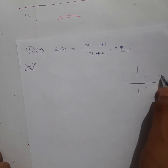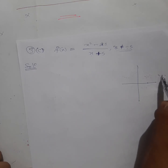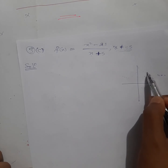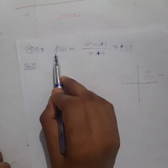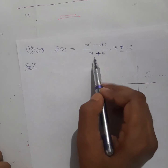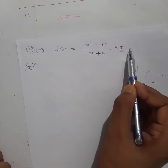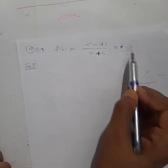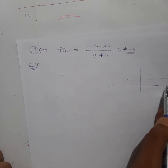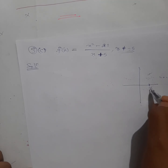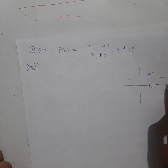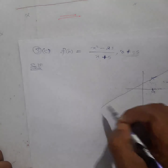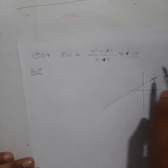The question is to check whether this function is continuous or not overall. Remember in the first question we checked only at x = 3 because they specifically said check at x = 3. But here they say check the continuity of the function where x is not equal to minus 5, meaning you check at all values except minus 5. Even if the graph breaks at minus 5, you don't need to check that point.